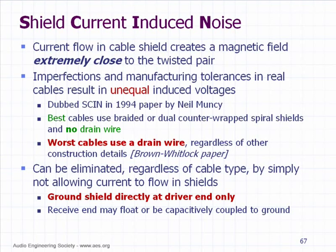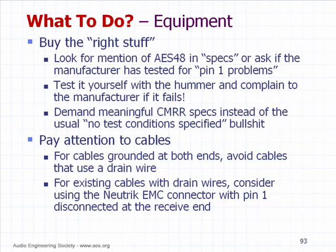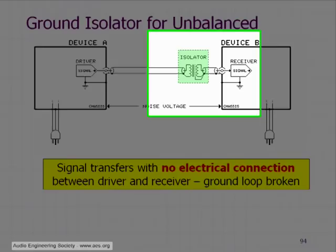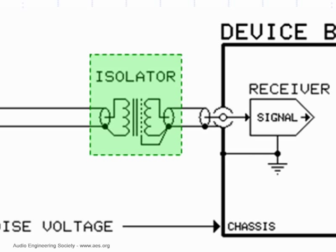But if you do a snake with mic level signals and it's grounded at the console and you ground it again at the snake, that creates a loop. If you have existing cables with drain wires, consider using the Neutrik ENC connector with pin one disconnected at the receive end. And if you have an unbalanced interface, a transformer is a perfect solution for eliminating the pathway for the ground loop current.